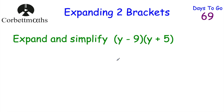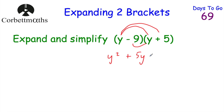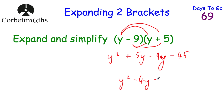This time we've been asked to expand and simplify (y − 9)(y + 5). Feel free to press pause and try this question yourself. So we do y lots of (y + 5) and then minus nine lots of (y + 5) and then simplify. y times y is y squared, y times five is plus 5y, minus nine times y is minus 9y, and minus nine times five is minus 45. Now simplifying the like terms: 5y minus 9y gives minus 4y. So the answer is y² − 4y − 45.